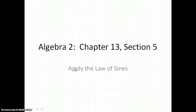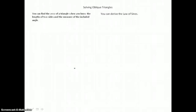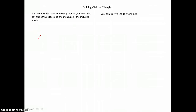In lesson 13.5, you will apply the Law of Sines. An oblique triangle is a triangle that's not a right triangle. The first thing we're going to look at is the area of an oblique triangle.